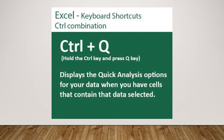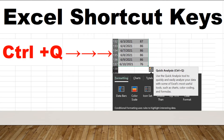It will display the quick analysis options for data when you have cells that contain that data selected. As shown here, the shortcut Ctrl plus Q is to display the quick analysis options for the selected cells with data.